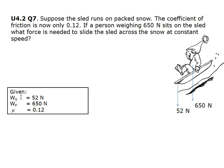What we are given is the weight of the sled, 52 newtons, the weight of the person, 650 newtons, and the coefficient of friction, mu, which is 0.12.